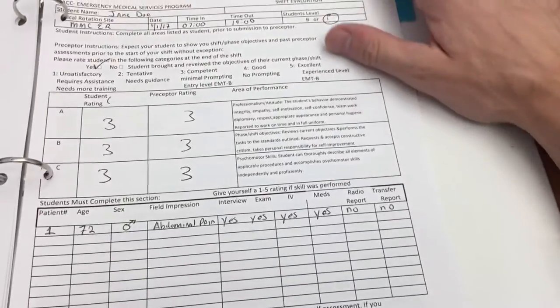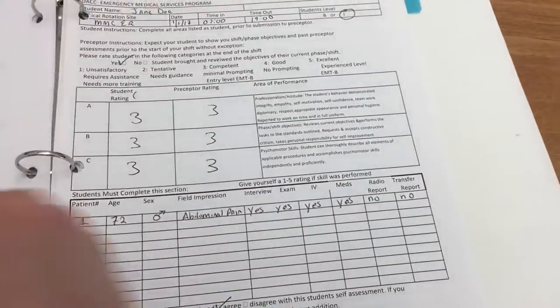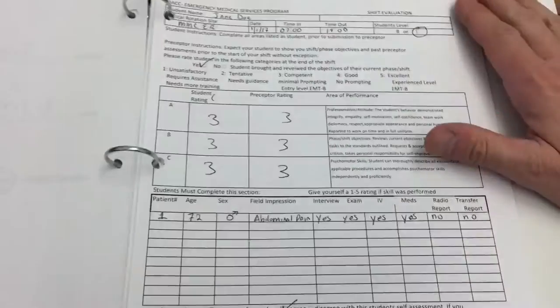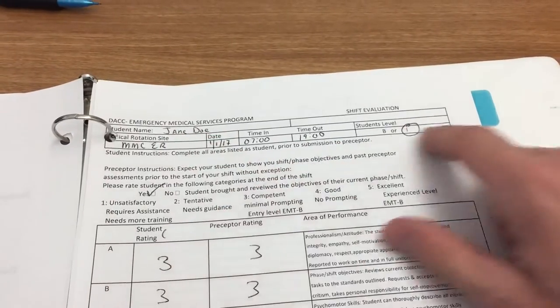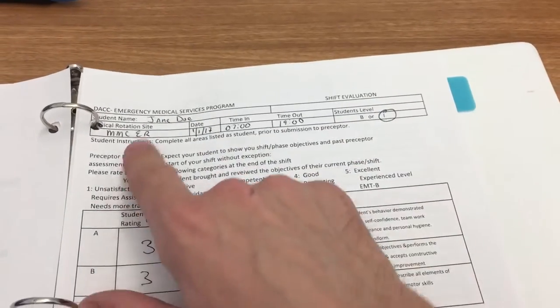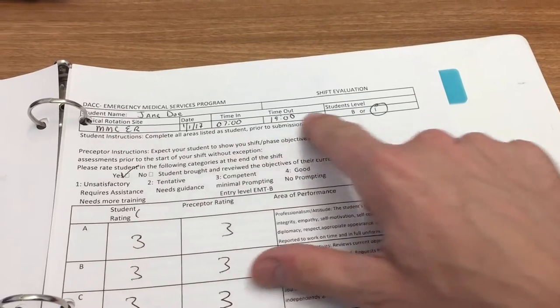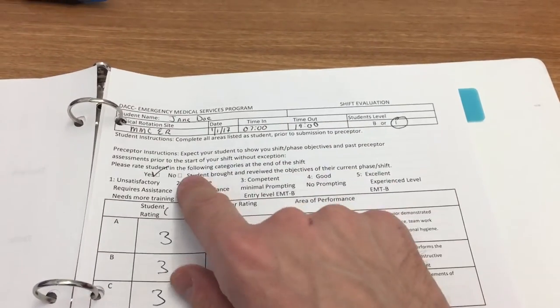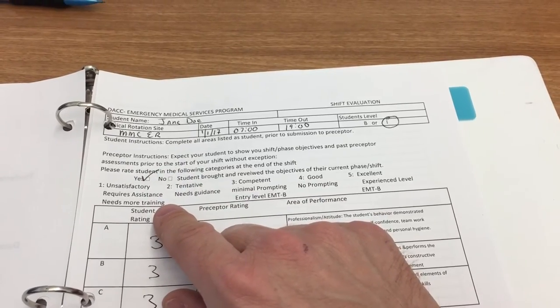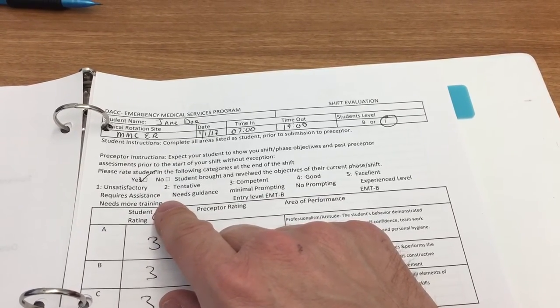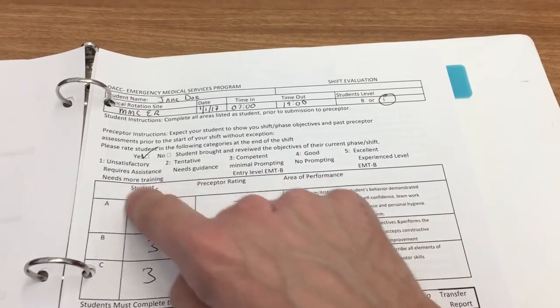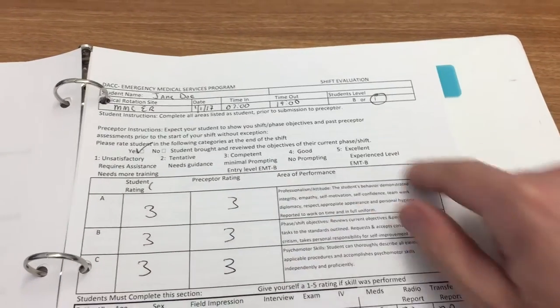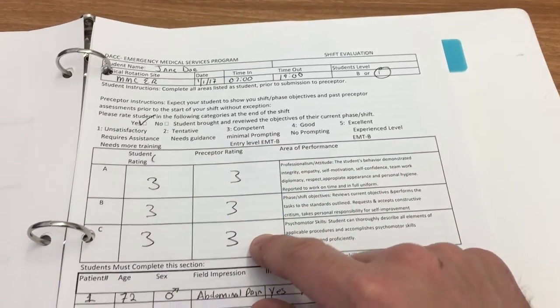And then underneath, just like kind of in your lab, underneath the shift cover page, you will have this here. This is your shift evaluation. You will put your name up here. The level is intermediate. Where you're at, this happens to be MMCER, the date, the time. The preceptor will check yes, you came in prepared. You had your objectives ready to go. And then what will happen is the student, that's you, will rate yourself or how you did in these areas of performance. And then your preceptor will give you a rating as well.